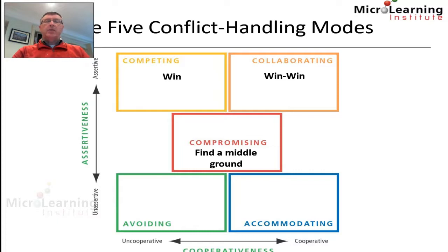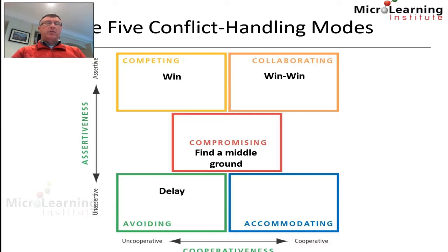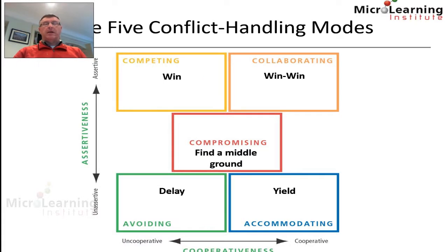The next mode is compromising, where we look to find a middle ground — being moderately cooperative and moderately assertive. The avoiding approach is where we are happy to delay the decision to avoid the conflict, being both uncooperative and unassertive. Finally, accommodating is where we want to be very cooperative but not assertive, essentially yielding to the desires of our colleagues.